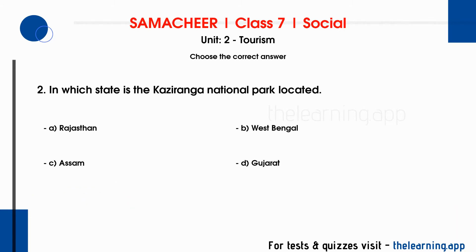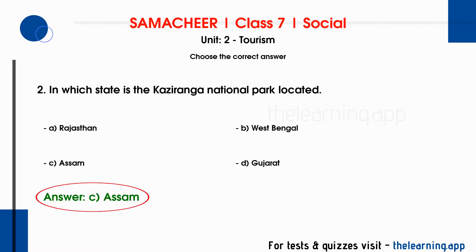Second question: in which state is the Kaziranga National Park located? Options are A) Rajasthan, B) West Bengal, C) Assam, D) Gujarat. Correct answer is option C, Assam. Kaziranga National Park is located in Assam.